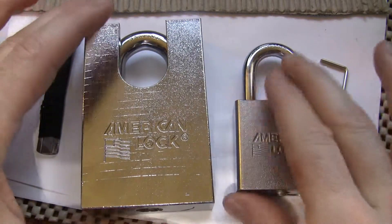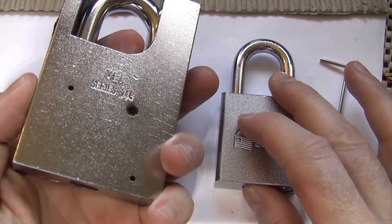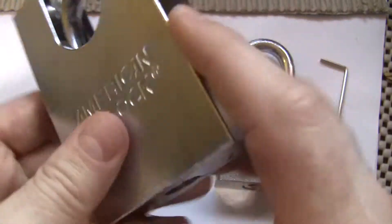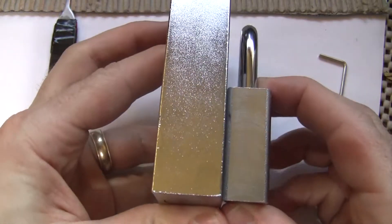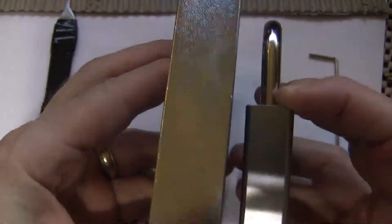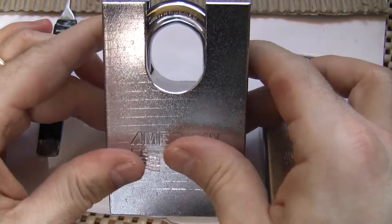Howdy. What I have here today is an American Series 748 heavy duty padlock. I've got it sitting next to a 5200 Series for size comparison. The 748 is 1 inch by 4 inches with a half inch shrouded shackle.